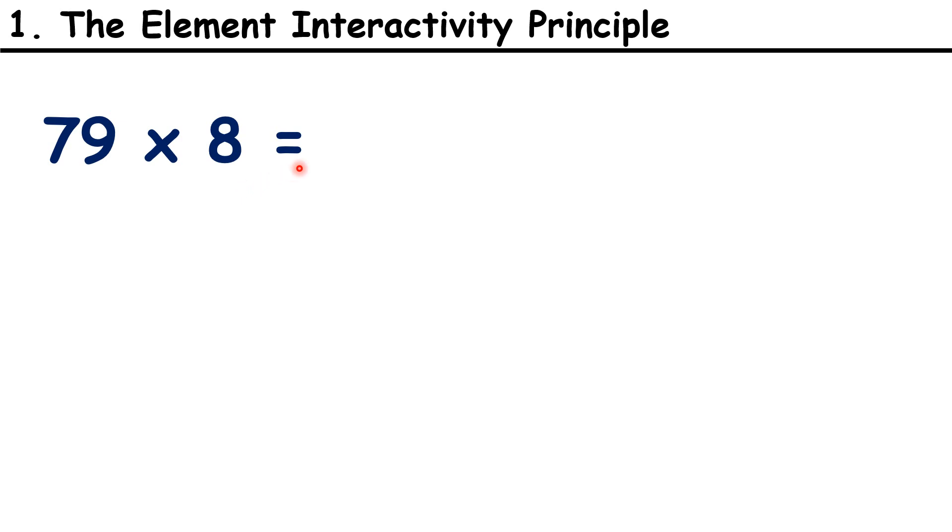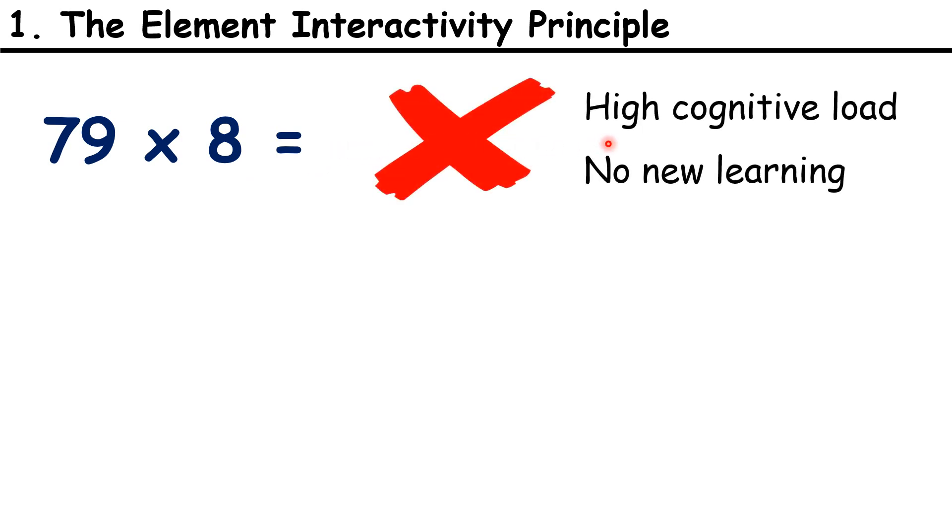If children are struggling to recall their times table facts, the cognitive load is too high, and they won't retain the new information taught in the lesson. Because there's a high cognitive load, there's no new learning. There's nothing transferred into long-term memory.